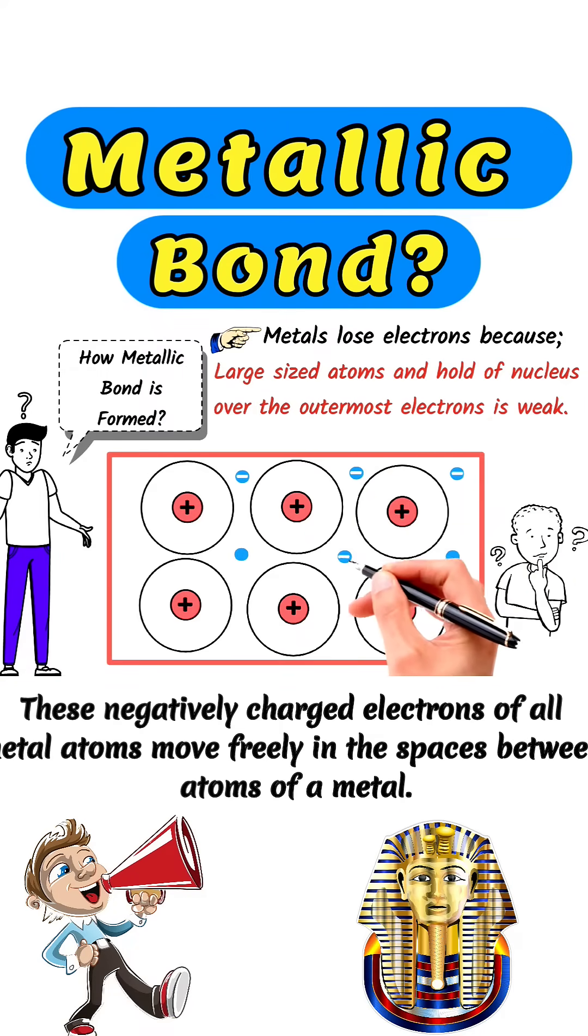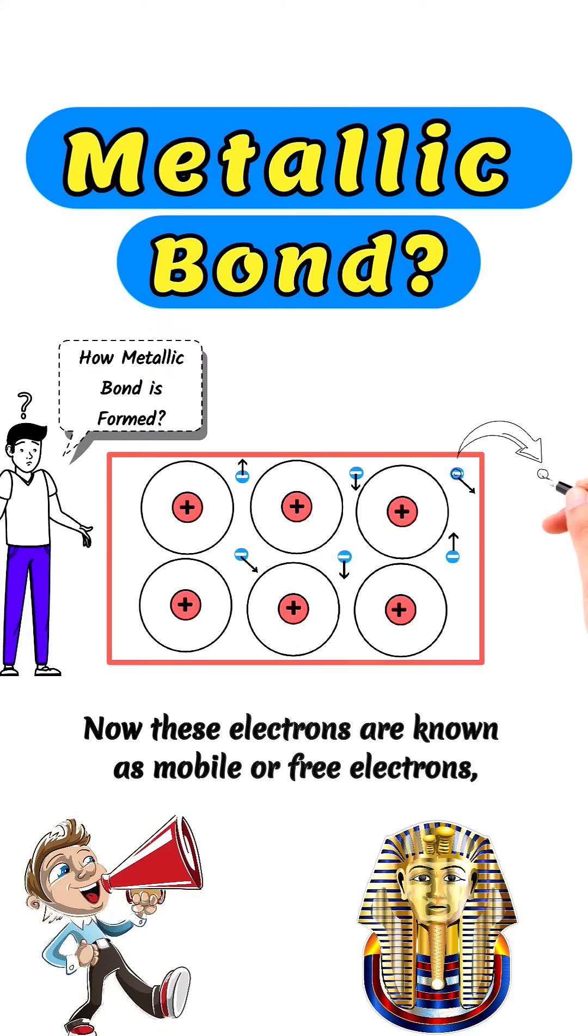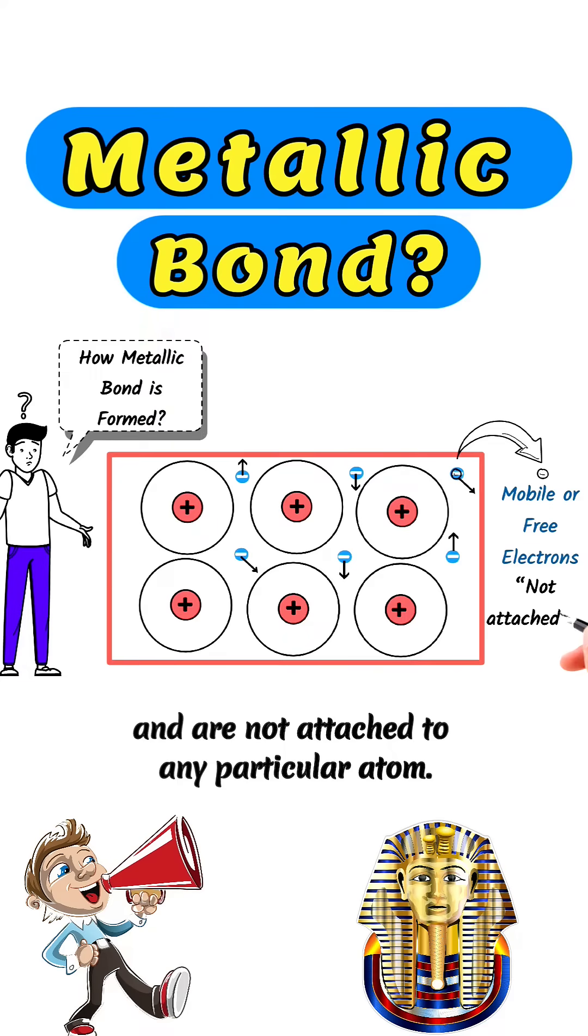These negatively charged electrons of all metal atoms move freely in the spaces between atoms of a metal. Now these electrons are known as mobile or free electrons and are not attached to any particular atom.